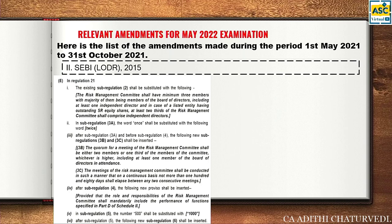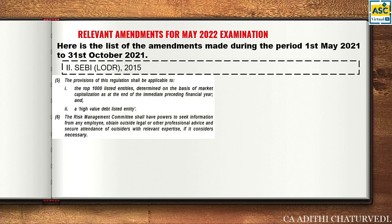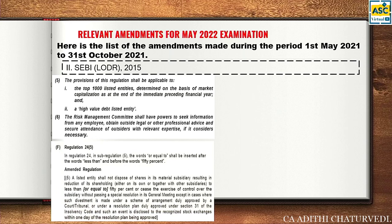After Sub-regulation 4, a new proviso is inserted: the role and responsibilities of the Risk Management Committee shall mandatorily include the performance of functions specified in Part D of Schedule 2. In Sub-regulation 5, the threshold of top 500 listed entities becomes top 1000. After Sub-regulation 5, Sub-regulation 6 is inserted. This is how your amended regulation looks — they've first given the amendments and then shown what the amended regulation looks like.